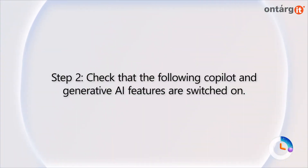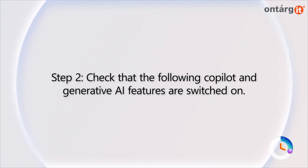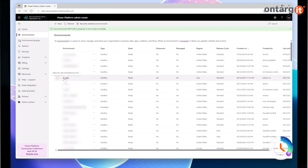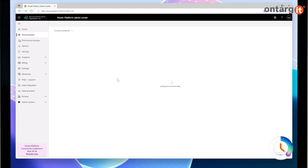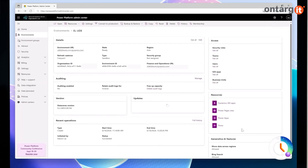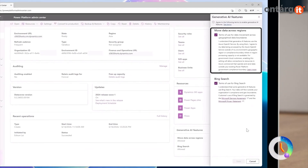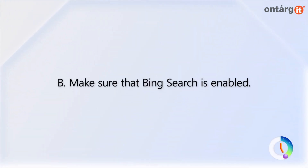Then check that the following Copilot and Generative AI features are switched on. If required by your region, allow cross-region data movement for your Dataverse environment. Make sure that Bing Search is enabled.